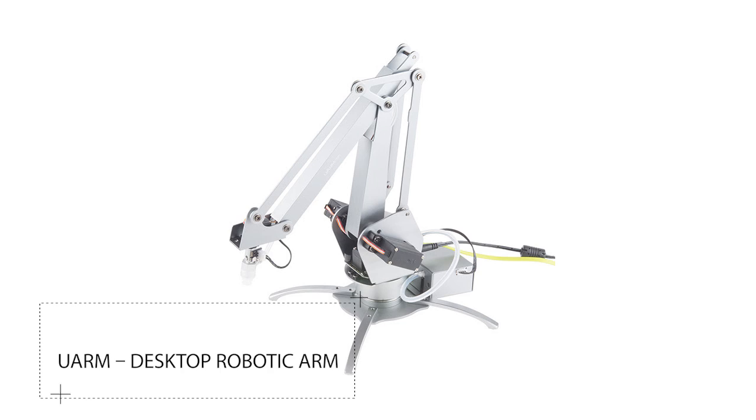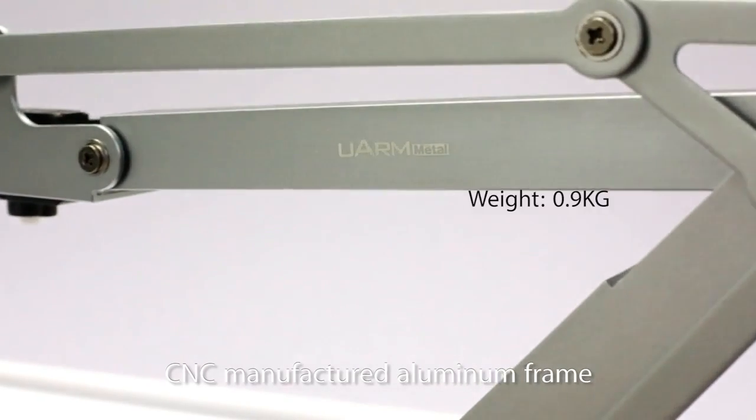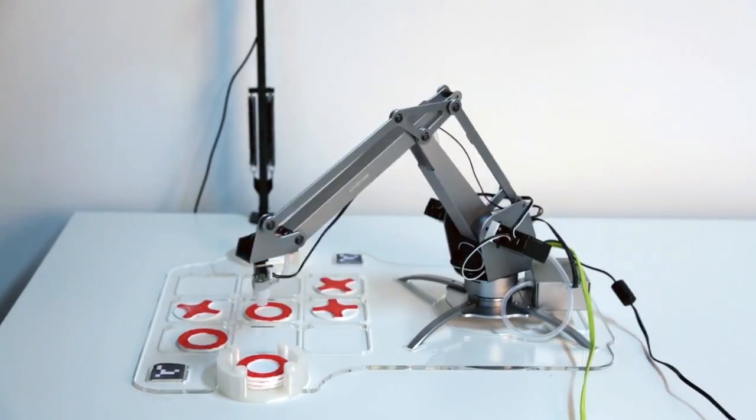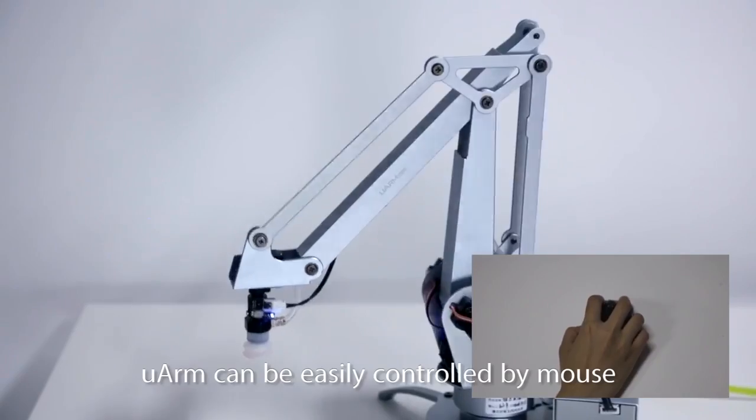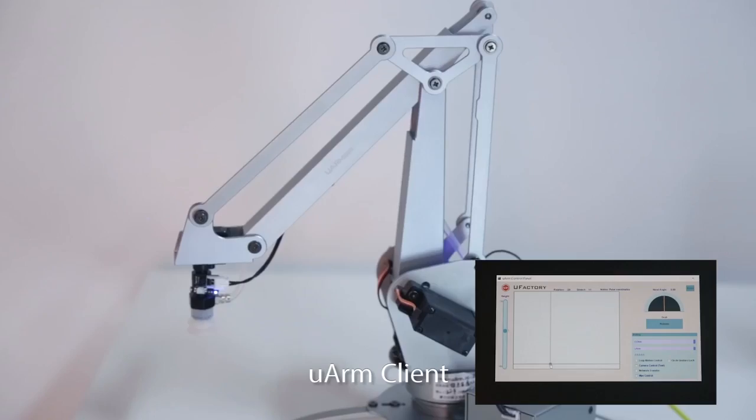Number four, the uArm Desktop Robotic Arm. The uArm is an Arduino-powered four-axis robot arm that has been modeled after industrial pallet packing and car building robots, which can be set up and used straight off your desktop.